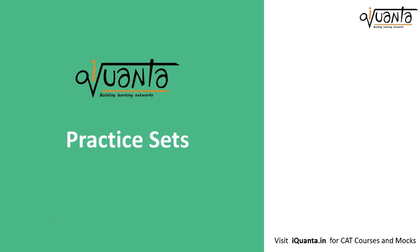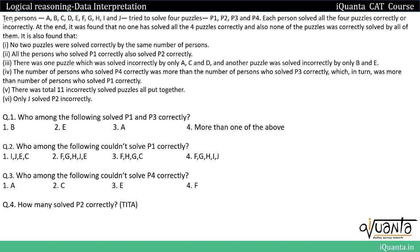Hello everyone, welcome again to the iQuantile RDI 50 series, where we solve an exact CAT-level set every day till CAT. Today's set involves 10 persons A, B, C, D, E, F, G, H, I, J who tried to solve four problems P1, P2, P3, and P4. Each person solved all four puzzles either correctly or incorrectly. No one solved all four correctly, and no puzzle was correctly solved by all of them.